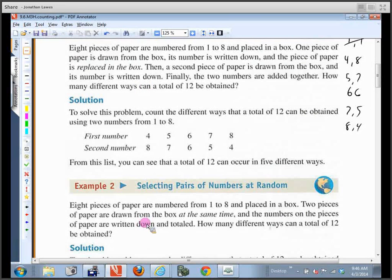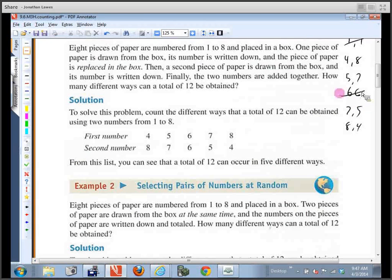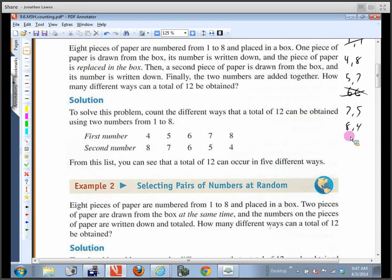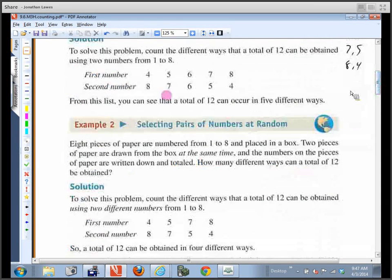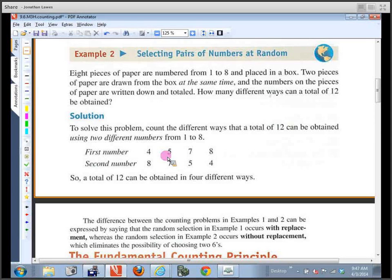This next one is set up without replacement. So if I get a four the first time, can I get an eight the second time if I take the four out and leave it out? Yeah. If I get a five the first time, can I get a seven the second time? Yes. If I draw a six the first time, can I get a six the second time? Nope. So I've got to eliminate that one right there. And both of these are possible. So we cut down from five possibilities to only four possible ways that we can get a 12 by changing the rules of the game, by changing the procedure.